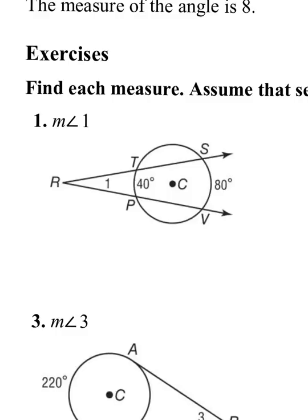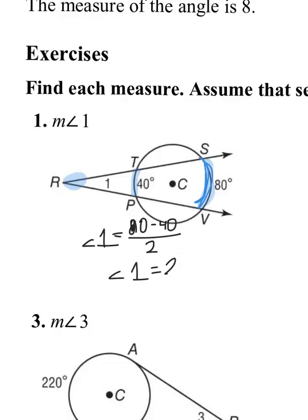Question number one — they start us off pretty basic. They give us the large intercepted arc and the small intercepted arc. Large minus small divided by two gives the outside angle, which is angle one. So angle one equals 80 minus 40 divided by two. Angle one equals 20 degrees.